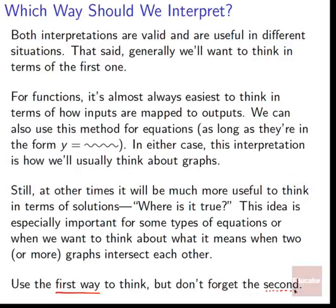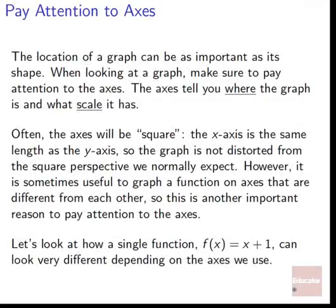Now that we understand what a graph is about, let's talk about axes — the vertical axis and the horizontal axis, those lines that we are graphing on. The location of a graph can be as important as its shape. The location is set up by its axes. We want to pay close attention to these axes. The axes will tell us where the graph is and what scale it has.